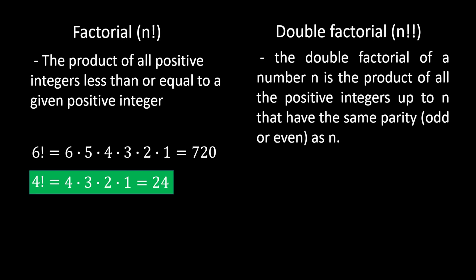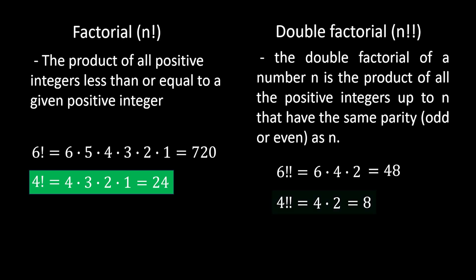Now let's check out double factorial. The double factorial of any number is the product of all positive integers up to that number that have the same parity — odd or even — as that number. So if we have double factorial of 6, that equals 6 × 4 × 2, since 6 is even. More interesting for us is 4 double factorial, which equals 4 × 2, and that is 8.